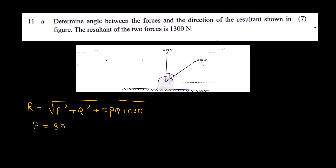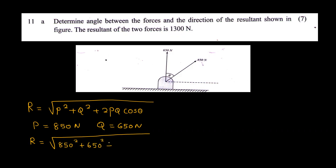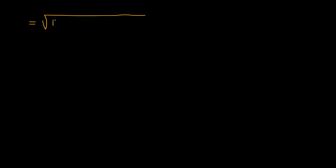The resultant is equal to the square root of P² plus Q² plus 2PQ cosθ. That is 2 into 850 into 650 cosθ, which equals 1145000 plus 1105000 cosθ.